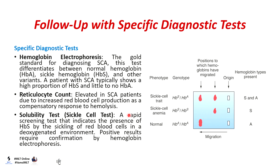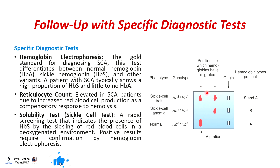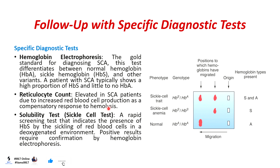Specific tests ordered include hemoglobin electrophoresis, which is the gold standard technique for sickle cell anemia. This test differentiates between normal hemoglobin and sickle cell hemoglobin and other variants. A patient with sickle cell anemia typically shows a high proportion of sickle cell hemoglobin (HbS) and little or no HbA. Reticulocytes will be elevated due to increased red blood cell production as a compensatory response to hemolysis. The solubility test is a rapid screening test indicating the presence of sickle cell hemoglobin by sickling of red blood cells in a deoxygenated environment.